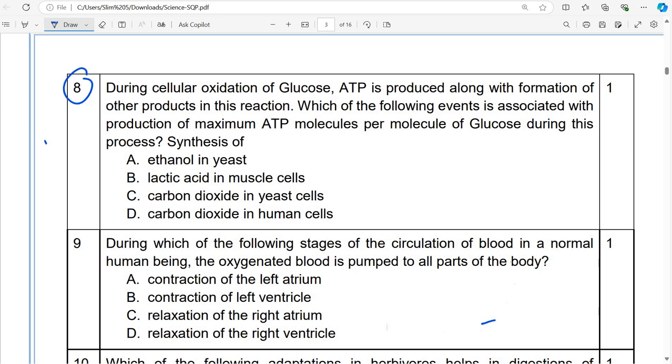Question number 8. During cellular oxidation of glucose, ATP is produced along with the formation of other products in this reaction. Which of the following event is associated with the production of maximum ATP molecules per molecule of glucose during this process?